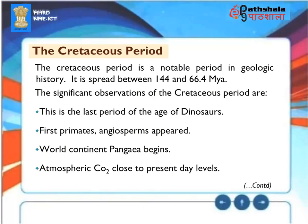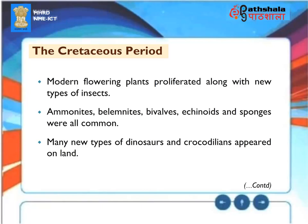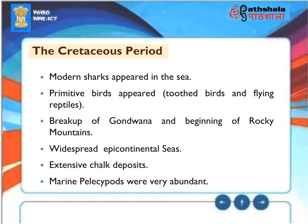The Cretaceous period (144 to 66.4 Mya) is a notable period in geologic history. Significant observations include: this is the last period of the age of dinosaurs; first primates and angiosperms appeared; world continent Pangaea began breaking apart; atmospheric carbon dioxide close to present-day levels; modern flowering plants proliferated along with new types of insects. Ammonites, belemnites, bivalves, echinoids, and sponges were all common. Many new types of dinosaurs and crocodilians appeared on land; modern sharks appeared in the sea; primitive and toothed birds and flying reptiles existed. Breakup of Gondwana, beginning of the Rocky Mountains, widespread epicontinental seas, and extensive chalk deposits occurred.